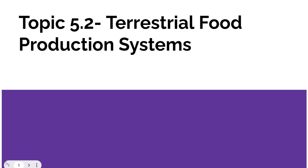This is topic 5.2, terrestrial food production systems. In topic 5.1, we talked about what soil is and what makes good soil — loam would be the best type of soil. Now that we've got good soil, how could you go ahead and design a production system? Unfortunately, in many parts of the world, climate conditions mean you have soil systems which are not optimal, so you need to tailor your production system to the conditions that you live in.